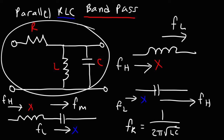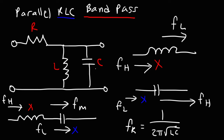Now let's analyze this circuit. The high-level frequencies will be filtered out by the capacitor. The low-level frequencies will be filtered out by the inductor. So the mid-level frequencies are going to have the highest voltage output because they're not easily filtered out by the inductor or the capacitor. High-level frequencies will have a low output voltage due to the capacitor, and low-level frequencies will have a low output voltage due to the inductor.